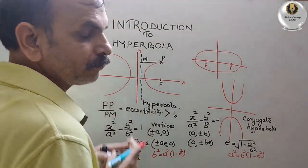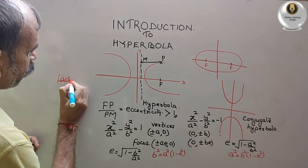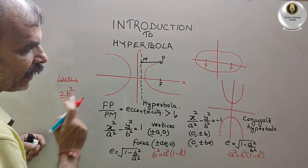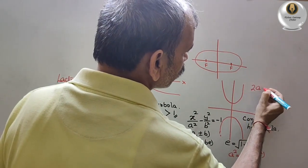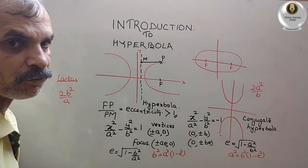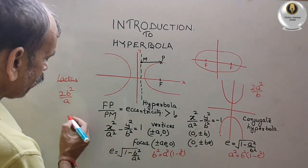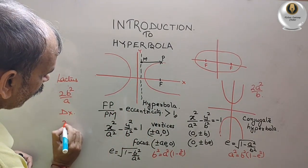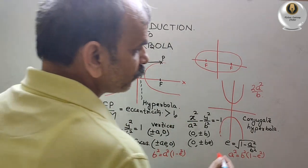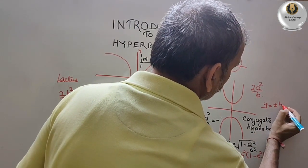Length of latus rectum: for the hyperbola, it is 2b² by a, and for the conjugate hyperbola, it will be 2a² by b. Directrix: for hyperbola, x equals ±a by e. For the conjugate hyperbola, it will be y equals ±b by e.